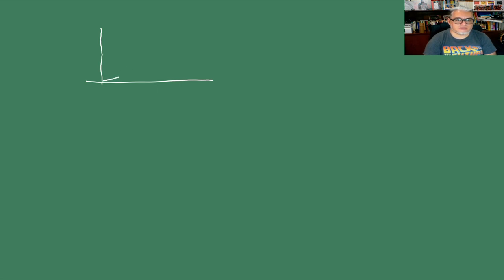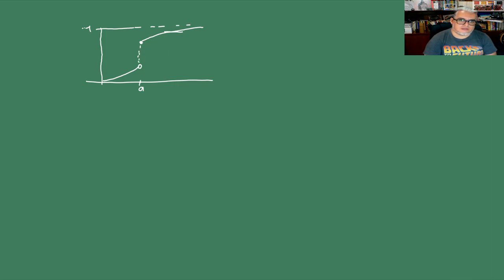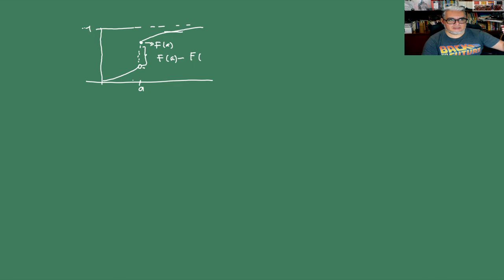Digamos que la distribución se ve de esta forma: crece desde cero, y en algún valor A tiene una discontinuidad, y luego crece hasta apachurrarse en el 1. Entonces, lo que vale F en A es el valor superior del salto; la diferencia F(A) menos el límite por la izquierda de F cuando x tiende a A mide ese salto, y eso es la probabilidad de que X sea igual a A.